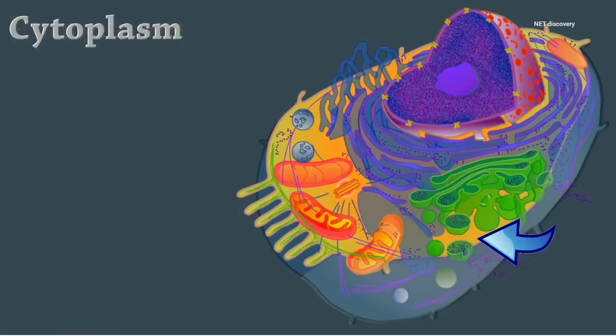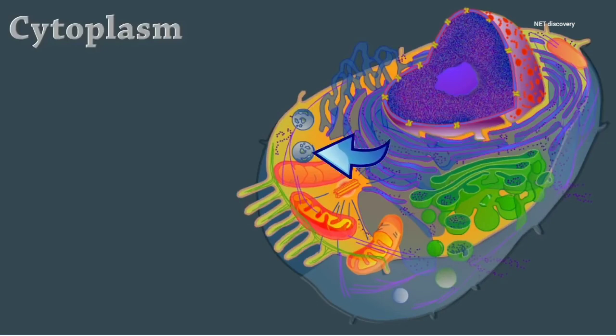The cytoplasm holds all of the organelles, which are specialized subunits within a cell. There are a number of different organelles, and each one performs a specific task.